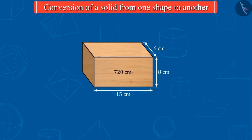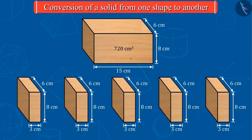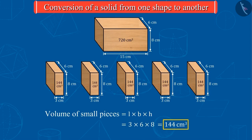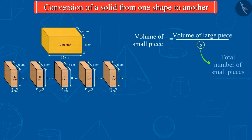If we cut this piece of wood into 5 equal pieces this time, the volume of each piece will be 144 cm³, which is equal to one fifth of the volume of the larger piece.